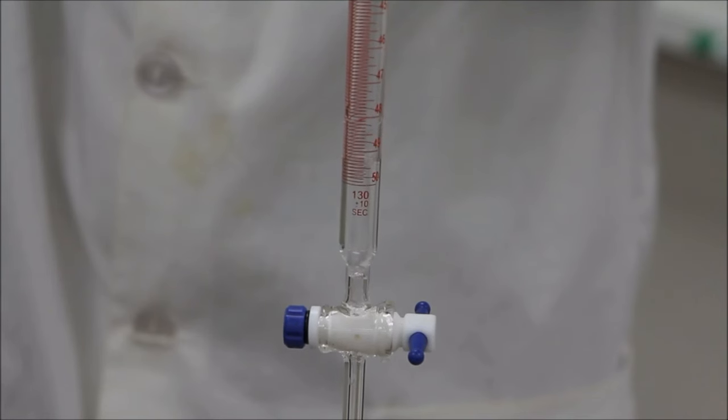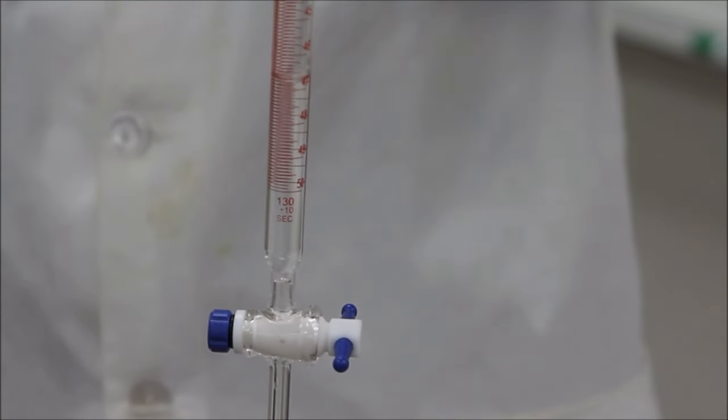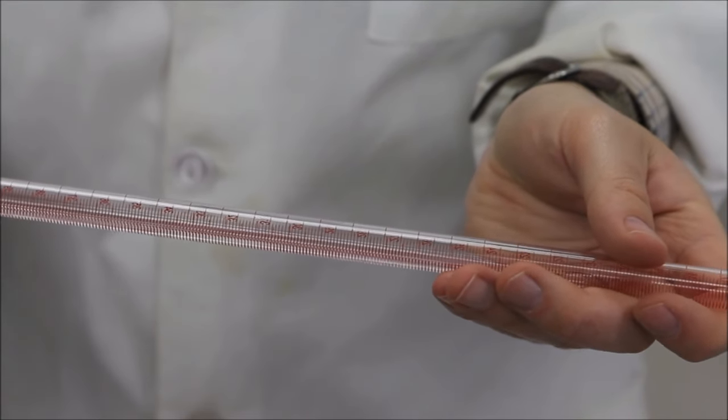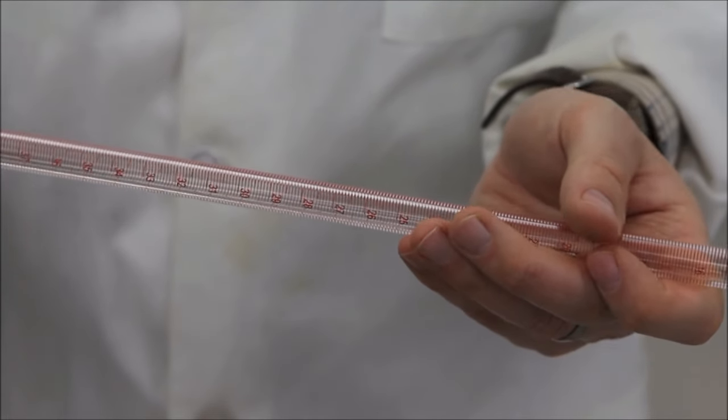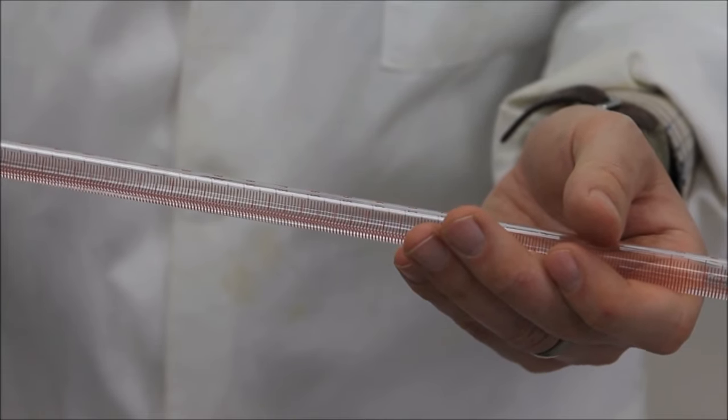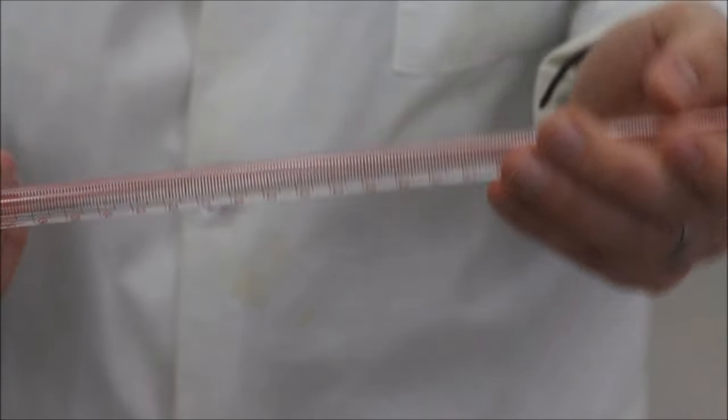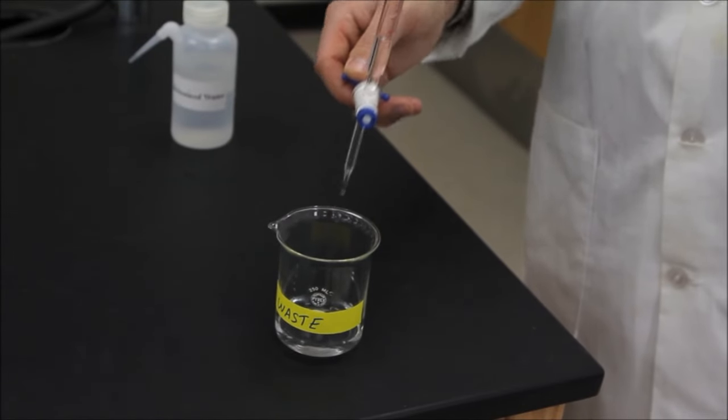Before we begin, it is good practice to first clean and then rinse the burette. To clean, we'll pour a few milliliters of deionized water into the barrel, making sure the stopcock is in the closed position, then turn the burette into an almost horizontal position. The deionized water should then slowly flow towards the top of the barrel. Holding this position, rotate the burette, which will efficiently coat the insides of the barrel with the deionized water. After 5 or 10 seconds of doing this, let the rinsing water drain into our waste container, and then repeat this cleaning step with two additional small volumes of deionized water.